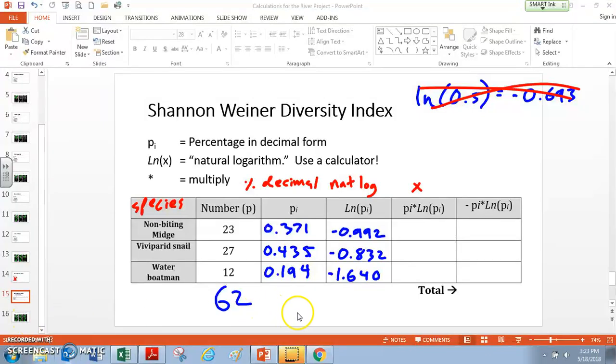Okay, so what I did was for each of these numbers, I took 0.371, found the natural log of that number, and here's what I get. These give us these really weird, ugly decimals. So negative 0.992, negative 0.832, negative 1.640. And these are all rounded to the nearest thousandth.